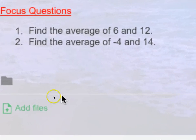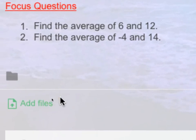Before you start with this particular lesson, I want you to take a look at these two questions. Find the average of 6 and 12, and the second question asks, find the average of negative 4 and 14. These are actually very easy. Anyone with a good clue on how to find the average of two numbers? Yes, Yamna? You add the numbers together and you divide it by the number of numbers — the total number of items you have.